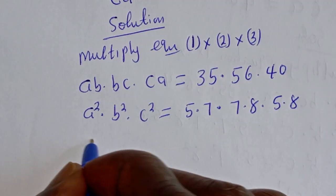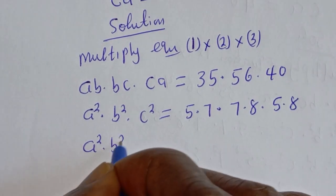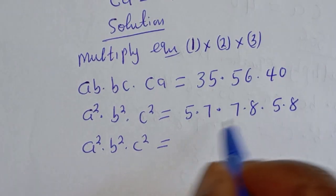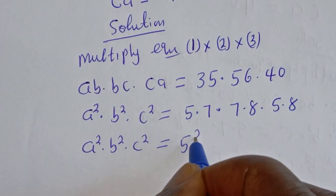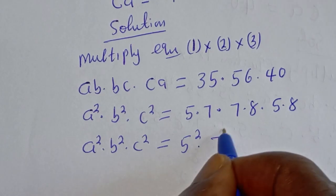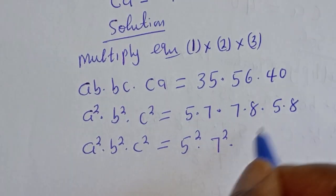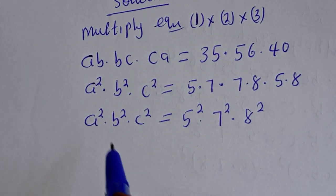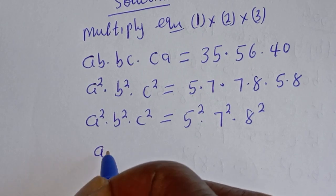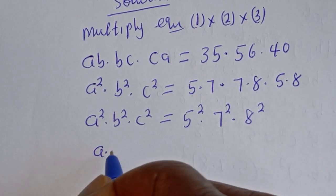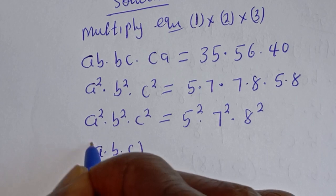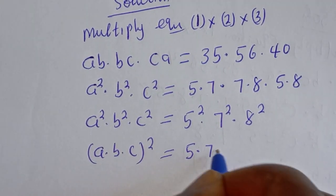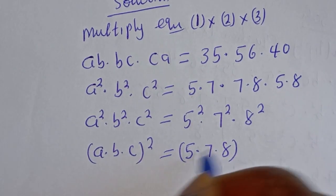Then A squared multiplied by B squared multiplied by C squared is equal to — here we have 5 and 5, this is 5 squared; multiplied by 7 and 7, this is 7 squared; and here we have 8 and 8, this is 8 squared. Then this can be written as (A multiplied by B multiplied by C) squared is equal to (5 multiplied by 7 multiplied by 8) squared.